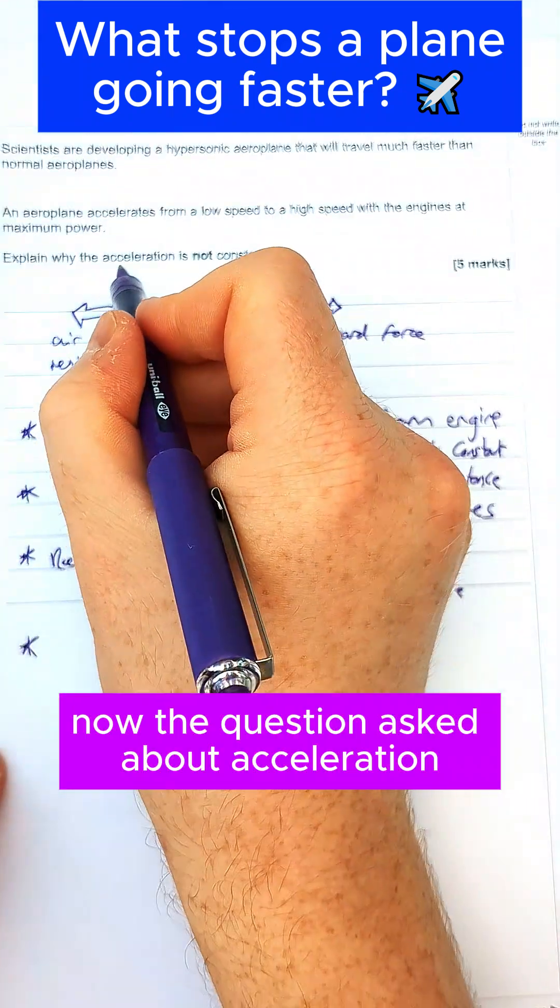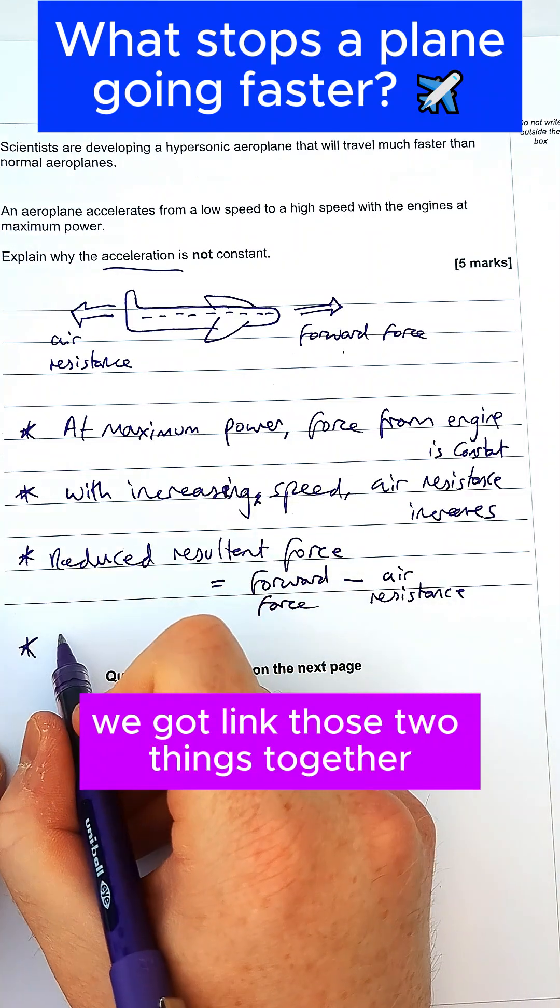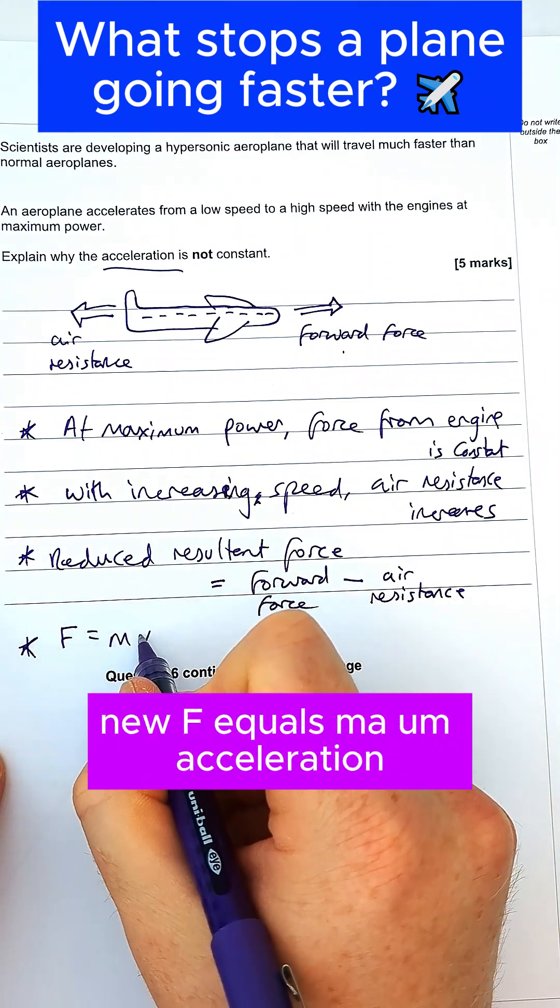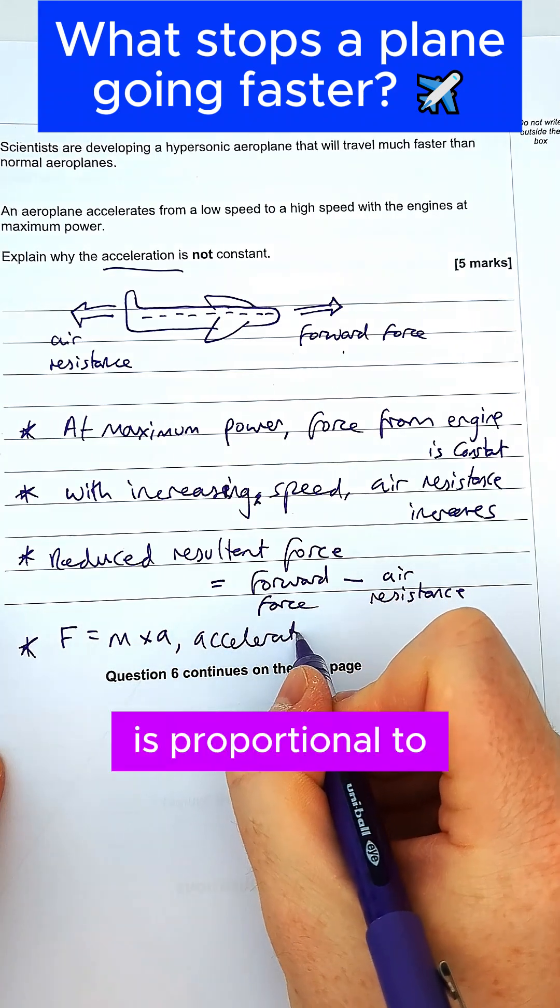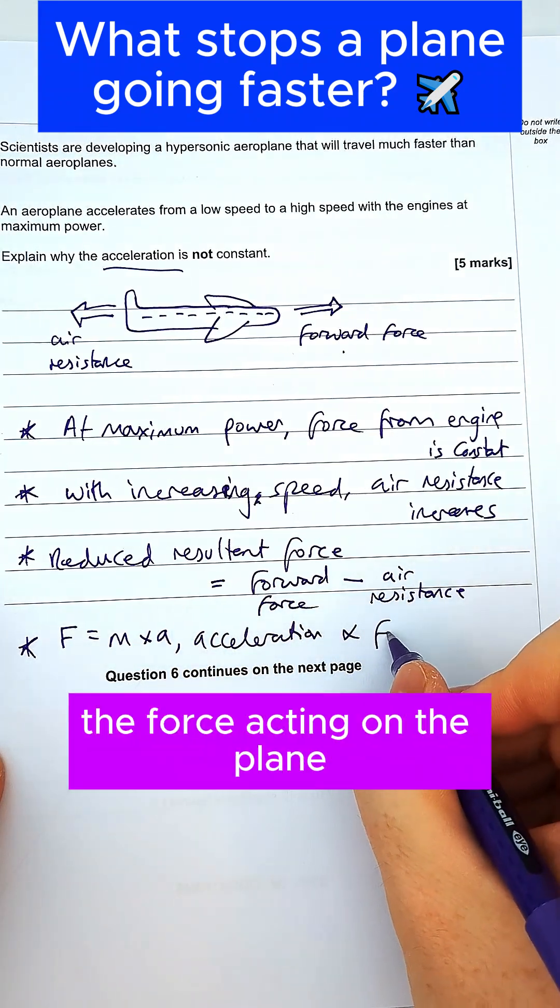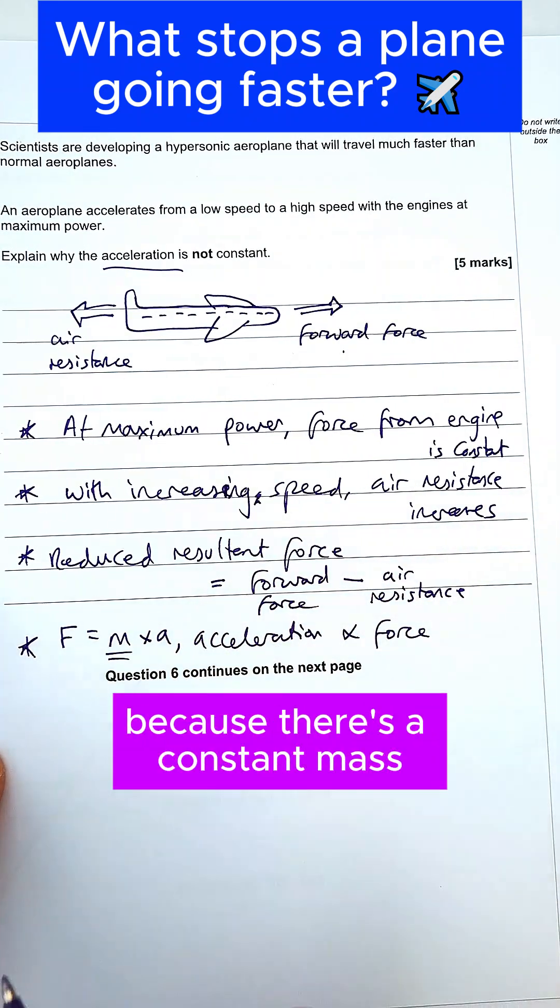Now the question asks about acceleration and we've been talking about forces. We've got to link those two things together. So due to Newton's second law, F equals ma, acceleration is proportional to the force acting on the plane because there's a constant mass.